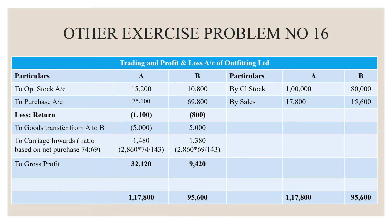Carriage inward ratio is based on net purchases: 74,000 for Department A and 69,000 for Department B, giving a ratio of 74:69 with a total of 143. Carriage inward is 2,860 rupees. For Department A: 2,860 × 74 ÷ 143 = 1,480 rupees. For Department B: 2,860 × 69 ÷ 143 = 1,380 rupees.